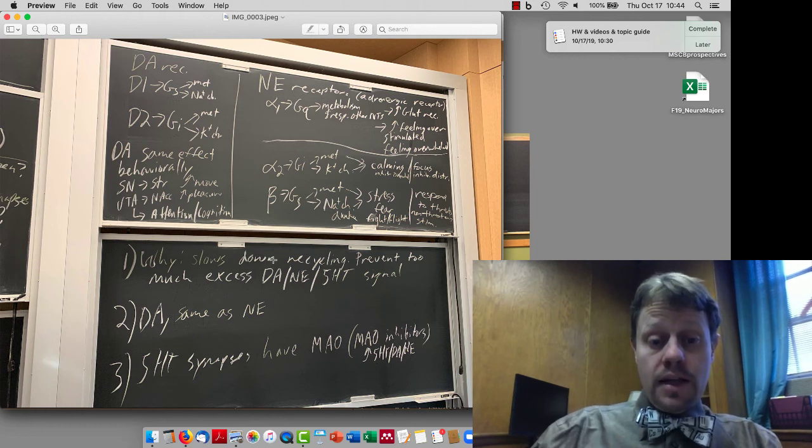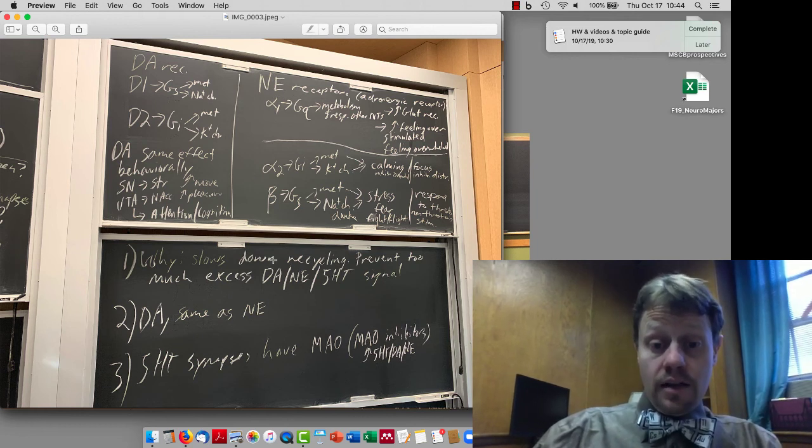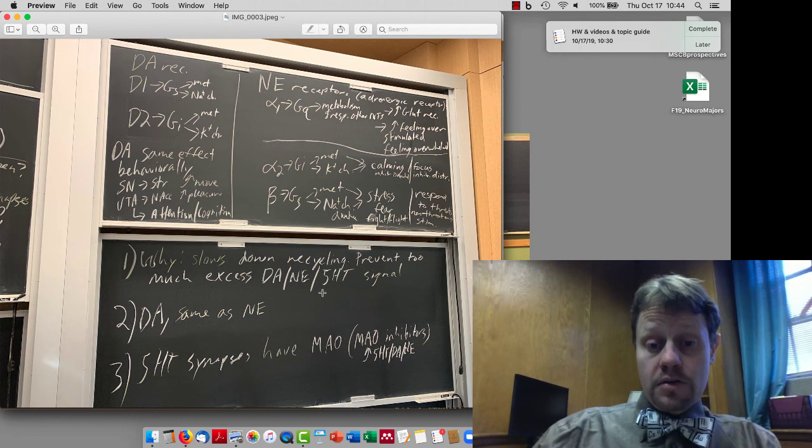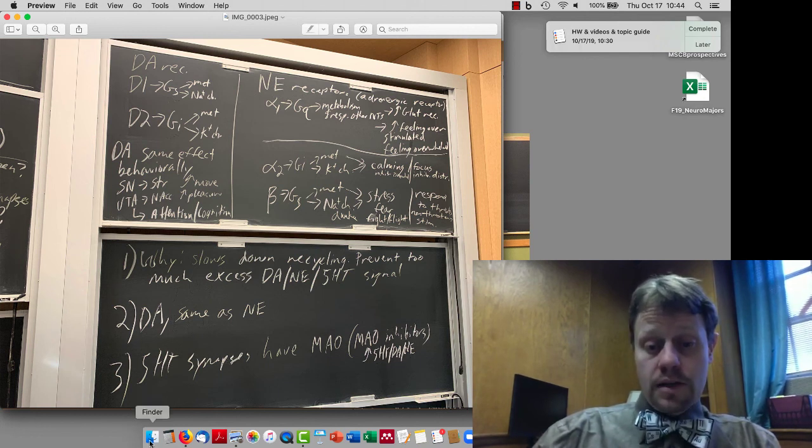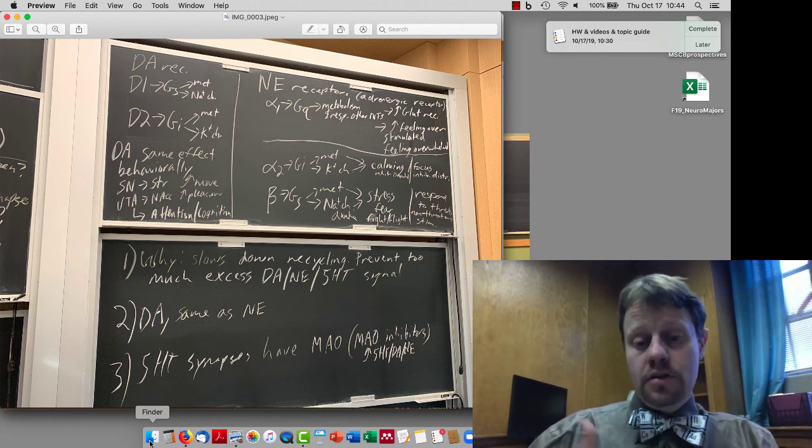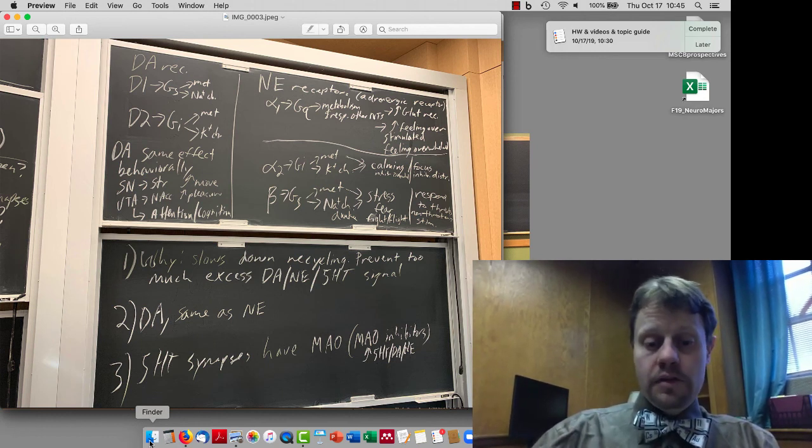So as we talked about, COMT and MAO slow down the recycling of dopamine and norepinephrine, and MAO slows down the recycling of serotonin. So at serotonin synapses, you're not going to find COMT there because it's not going to be effective. Just monoamine oxidase is there. But monoamine oxidase inhibitors increase the amount of serotonin, dopamine, and norepinephrine. We'll return to those a little bit when we talk about depression and depression treatments.